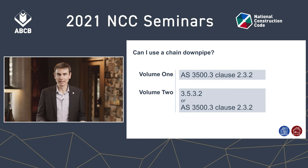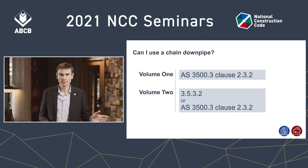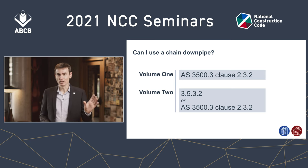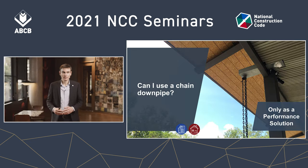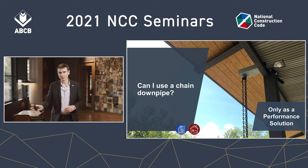At the very end of that clause is an informative note. Notes in standards are informative — they don't have to be followed. Yet the informative note simply reads: 'chains should not be used as downpipes.' So can I use a chain downpipe? Not as a deemed-to-satisfy solution — only as a performance solution — however you may wish to take advice from AS 3500.3.